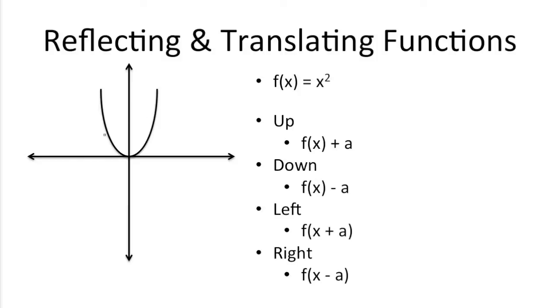Moving on to translating functions, here we have a parabola x squared. In order to move this parabola up by a certain number of units, all you need to do is add that number of units to the outside of the function. So for instance, here we have x squared. If we wanted to move this parabola up the y-axis one unit, we would just add 1 to the outside, making it x squared plus 1. In order to move it down, all you need to do is subtract it by 1 to move this parabola down one unit.